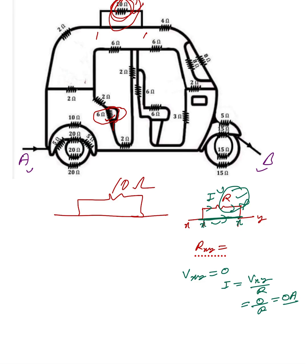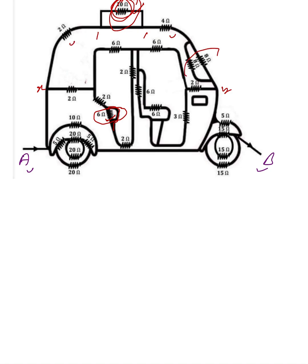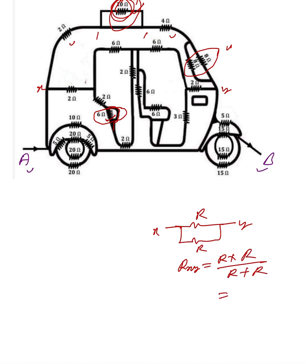Now we discuss the remaining circuit one by one. Suppose that point is X and that point is Y. We have a 2 ohm, a 4 ohm, and two 8 ohm resistances, and both 8 ohm are in parallel. For a parallel combination of two equal resistances R and R, R_XY equals R×R divided by R+R, which is R²/2R = R/2. So if two resistances are the same, the equivalent is always R/2. Here we have 8/2 = 4 ohm.